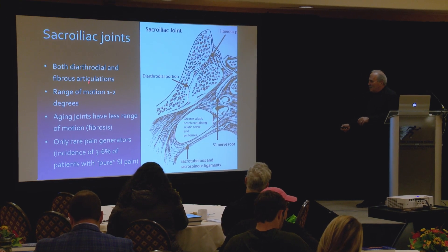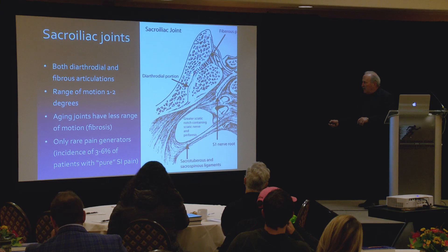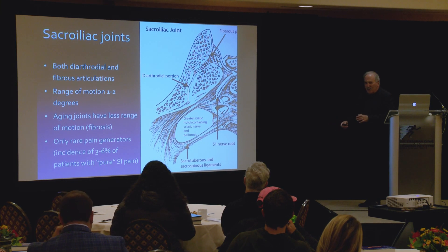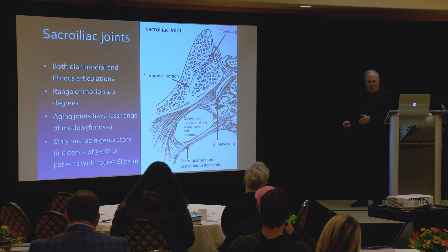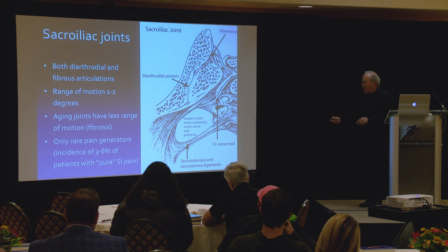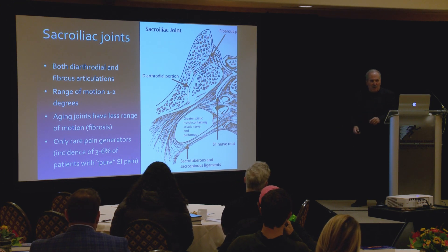Sacroiliac joints are a very unusual joint because they have both diarthrodial and fibrous portions. Diarthrodial means two smooth bony surfaces covered with hyaline cartilage, a capsule and synovium, and synovial fluid lubricating the joint — a regular joint like a hip, knee, or elbow. But the joint also has fibrous tissue like you find in the clavicle or the pubic symphysis. With aging, joints have less range of motion; normal range of motion is 1 to 2 degrees, and they are only rare pain generators. Many patients come in with a diagnosis of sacroiliac disorder, but most of the time it's not.